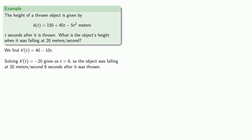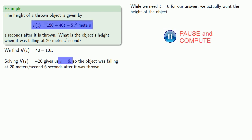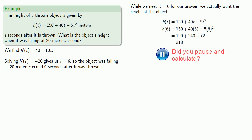However, t equals 6 itself is not the actual answer to the question. We want the object's height. Fortunately, we have a way of finding that. So we'll let t equals 6 and substitute that into our equation for the height and get 318, which is an answer measured in meters.